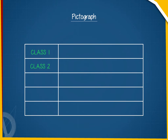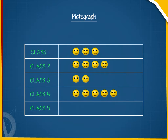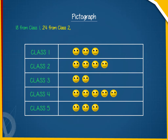This pictograph shows us the data for students interested in going to the school picnic from classes 1 to 5: 18 from class 1, 24 from class 2, and 12 from class 3.